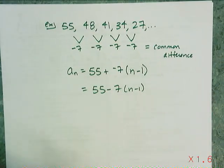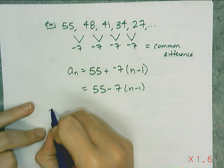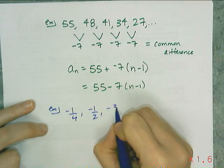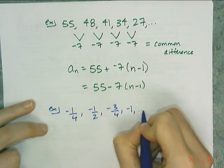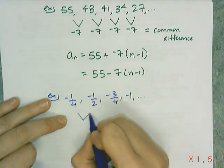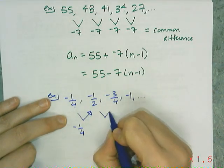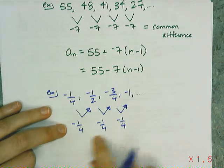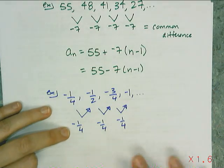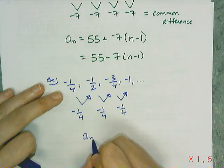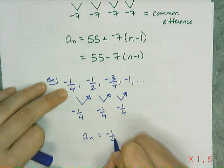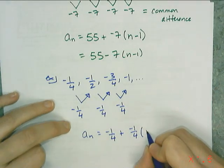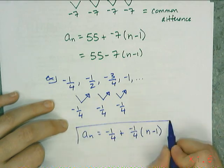Let me do another one — this time with fractions. If I have the sequence negative 1/4, negative 1/2, negative 3/4, negative 1... Going from negative 1/4 to negative 1/2, I am subtracting a fourth, then subtracting another fourth, then subtracting another fourth. So I know it's arithmetic. The common difference is negative 1/4. The explicit formula is: a sub n equals negative 1/4 plus (negative 1/4) times (n minus 1).